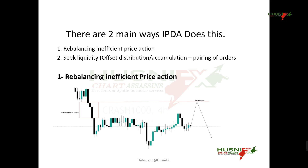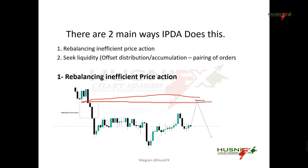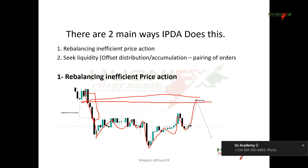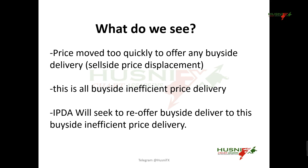Seeking liquidity means the offset of distribution and accumulation — this is the baiting of orders. They have to bait orders, and this is what they do for rebalancing inefficient price action. As you can see in this example on the chart, price has created an inefficient price of selling delivery here, and price has created a low, baiting orders, and is finally trying to come into this area for rebalancing.